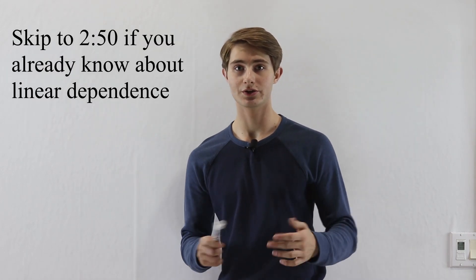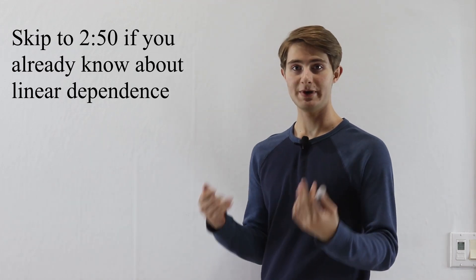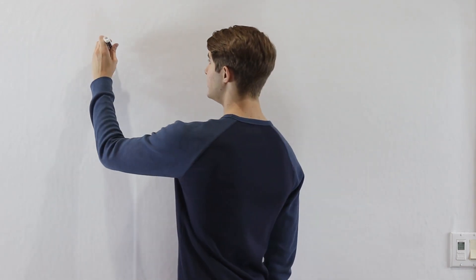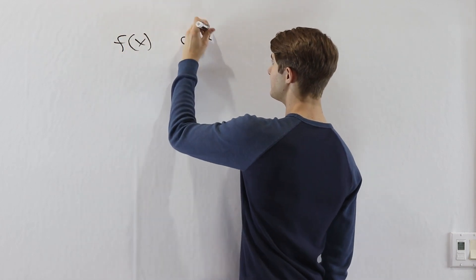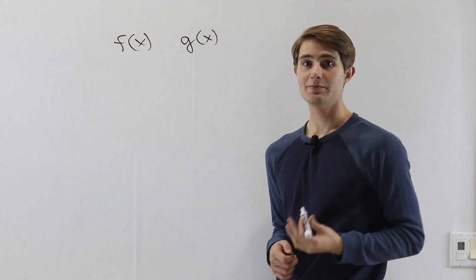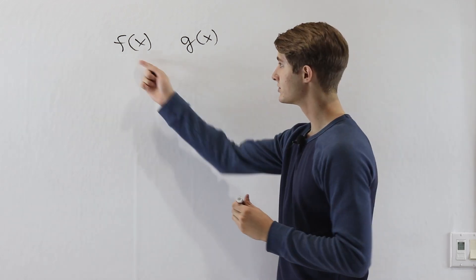We are going to talk about something called the Wronskian determinant in differential equations. The purpose of the Wronskian determinant is to check for something called linear independence. This is something we talked about a little bit in the video about repeated roots. Linear independence means that if we have two functions, f of x and g of x, they are linearly independent if they are not constant multiples of each other.